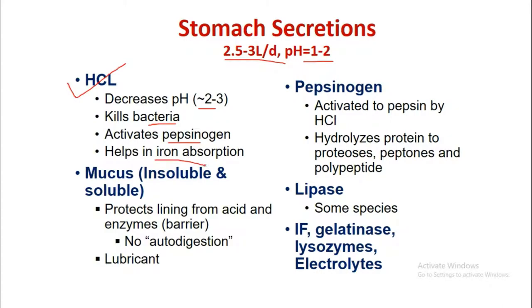There are two different types of mucus secretion: insoluble mucus and soluble mucus, which protect the lining from acid and enzymes, form a barrier to prevent auto-digestion of the gastric mucosa, and act as a lubricant. Pepsinogen is the most important proteolytic enzyme inside the stomach, secreted in inactive form and activated to pepsin by HCl. Pepsin hydrolyzes protein to proteoses, peptons, and polypeptides. Other secretions include lipase, intrinsic factor, gelatinase, lysozymes, and electrolytes.